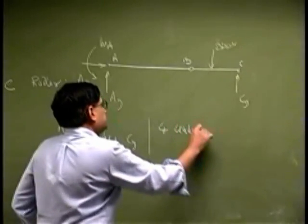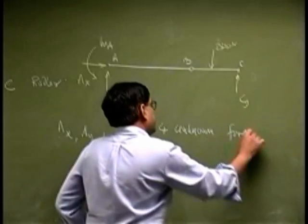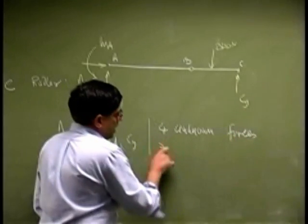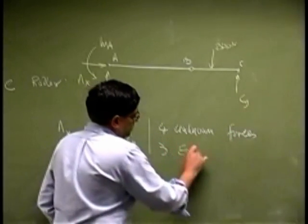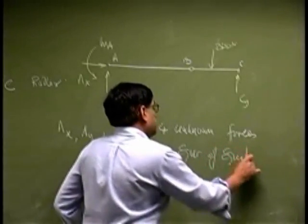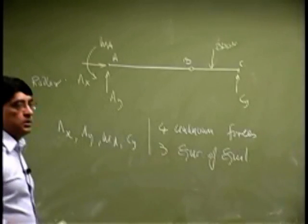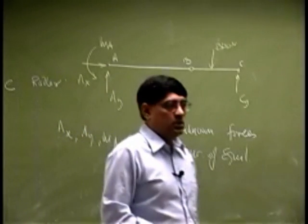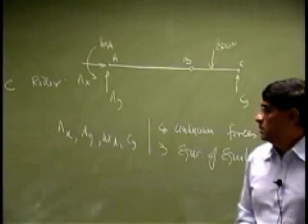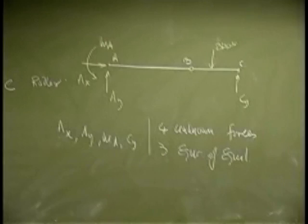Or four unknown forces, and you only have three equations of equilibrium. So the way I've drawn the free body diagram, you really have more unknowns than equations.